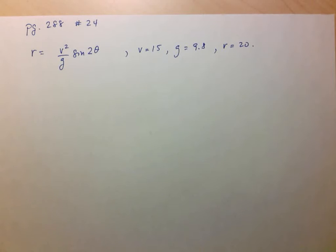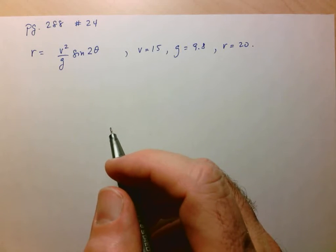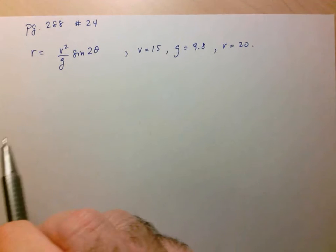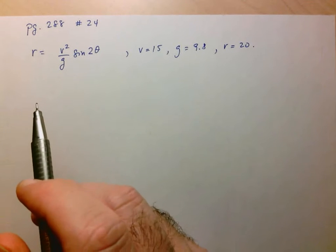Hi folks, we're going to take a look at page 288, number 24. Here we've got a human cannonball who wants to launch himself into the air and land in a particular location. This is the equation that's going to do that for him or her.